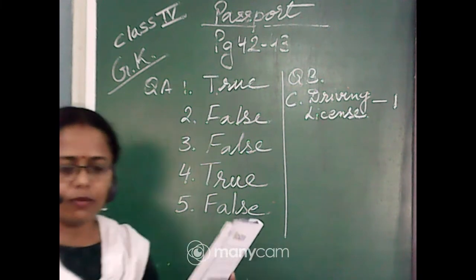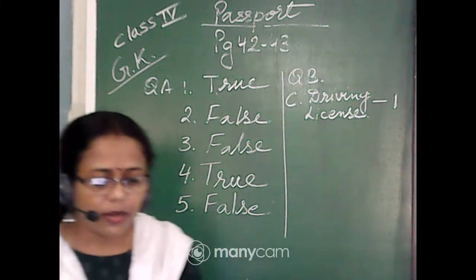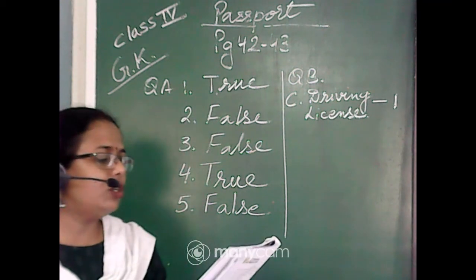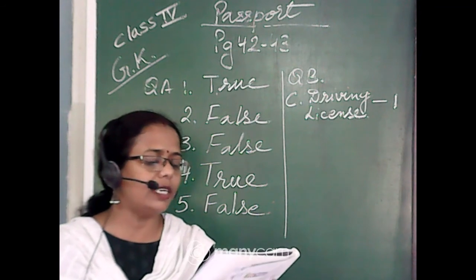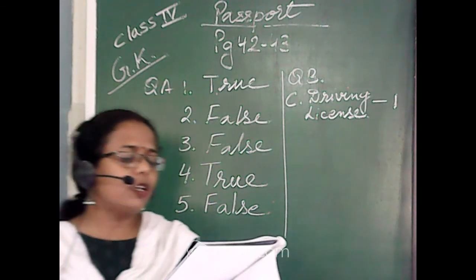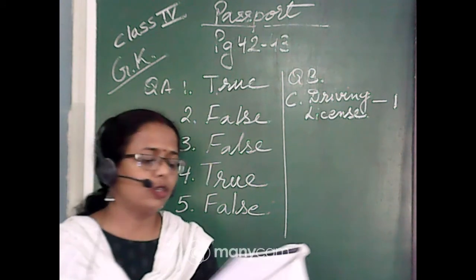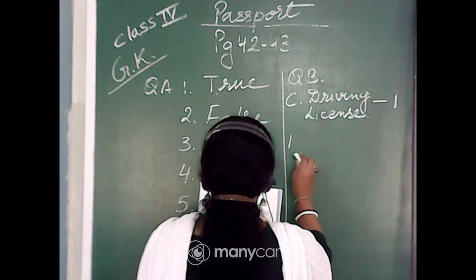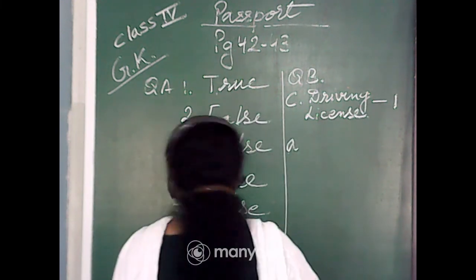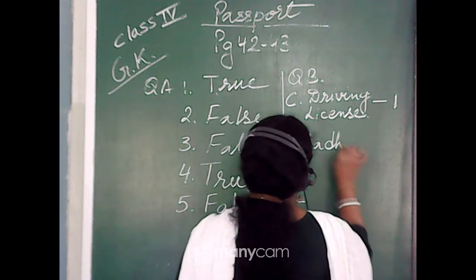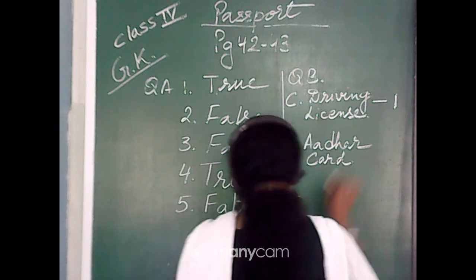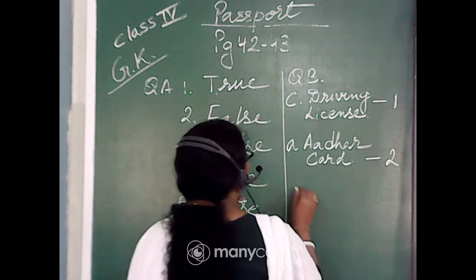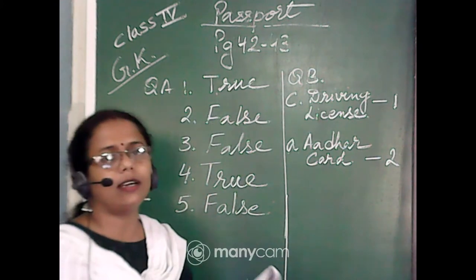Number two: 'This is a unique number having 12 digits for each person living in India, and has a logo which looks like the rising sun.' This is the Aadhaar card — option A. So Aadhaar card, which has a rising sun logo visible on it, is matched with number two.